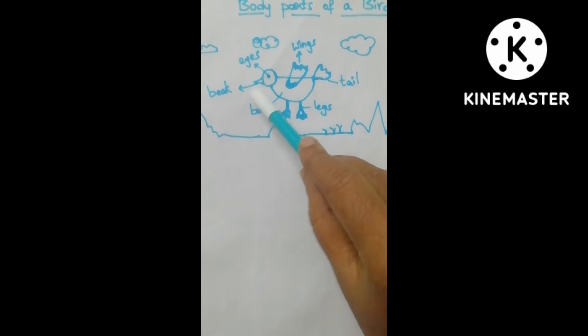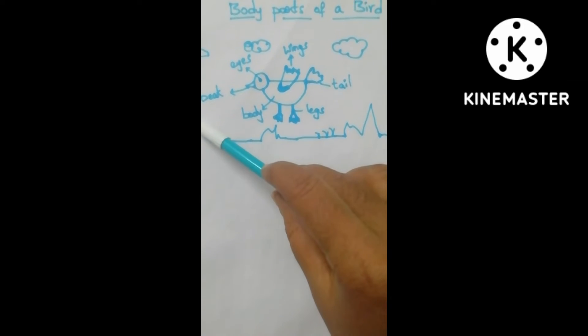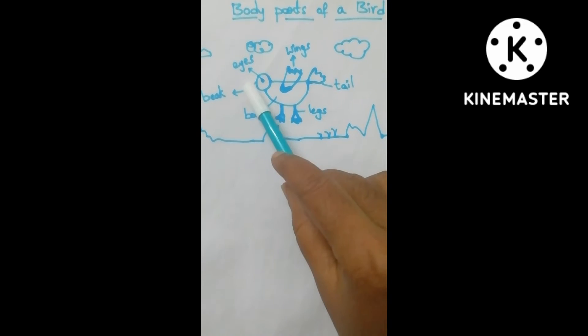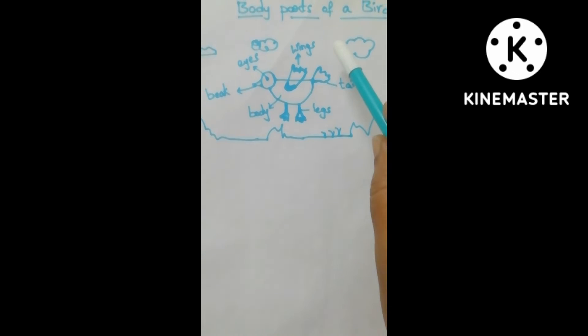It has legs but it doesn't have hands. It has wings. The bird has wings, so wings are useful for flying. And birds have eyes.